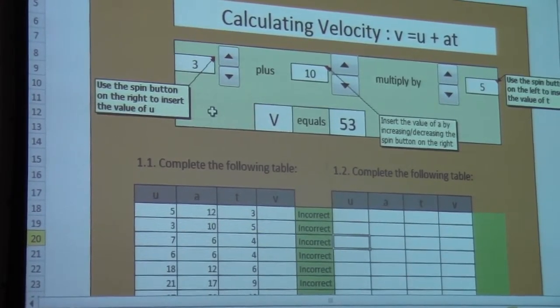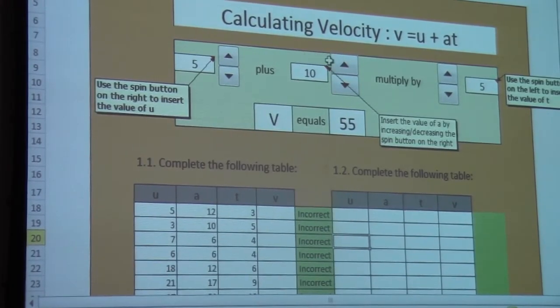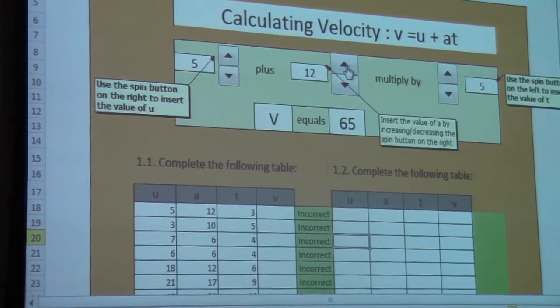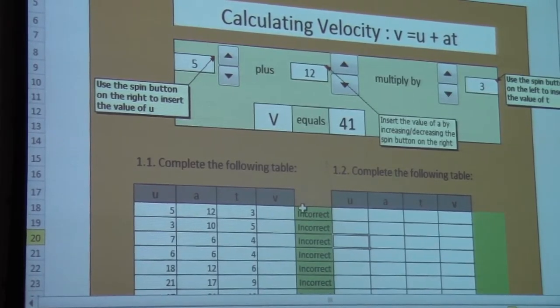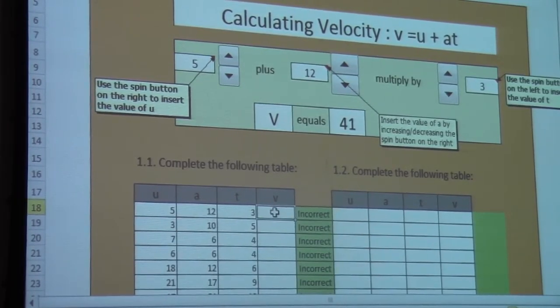It's 5. They'll spin to get 5, and then they spin to get 12, and then they make this a 3. And then indeed they get an answer which is 41.